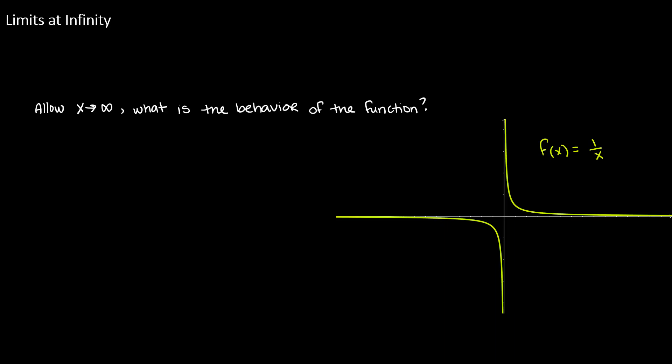We've talked about limits that tend to infinity. For example, a function with a vertical asymptote - as we approach the vertical asymptote, maybe the function behavior tends to positive infinity. But what about limits where we allow the input variable x to approach infinity? And then we ask the question of what's the function behavior?